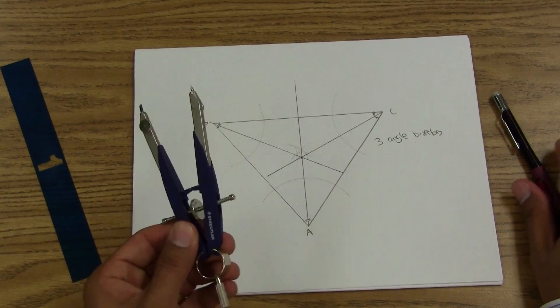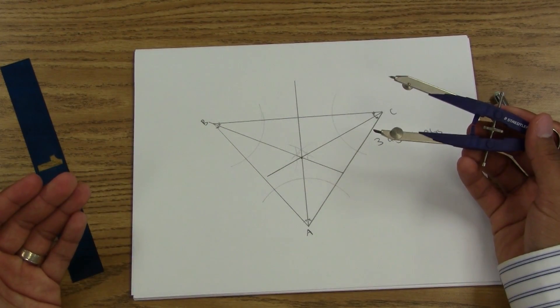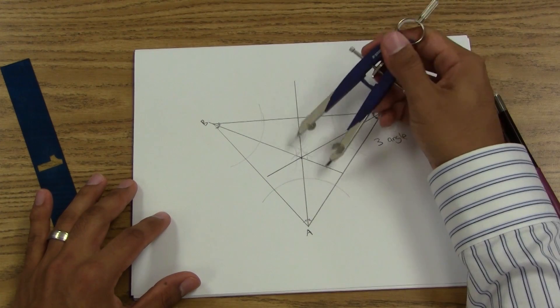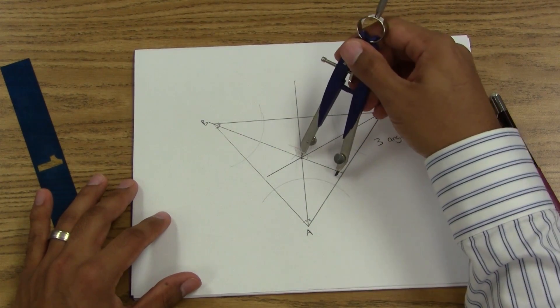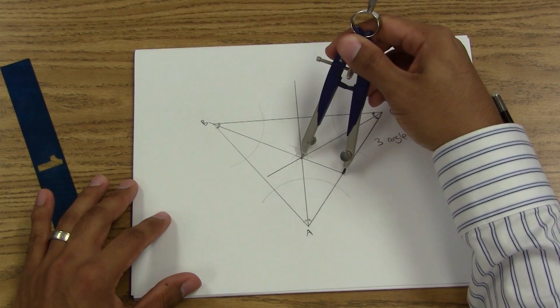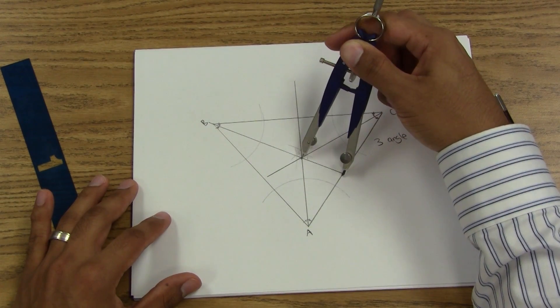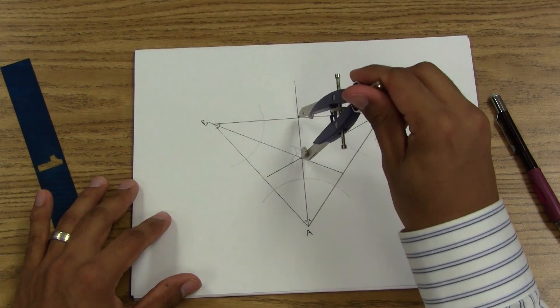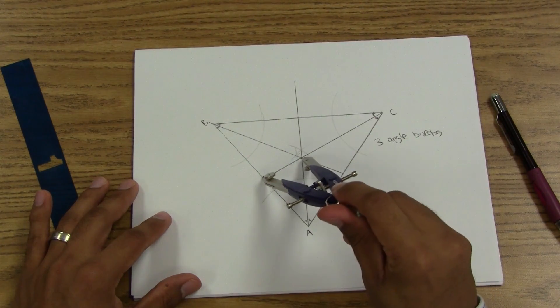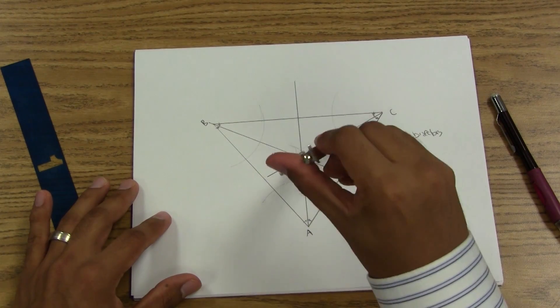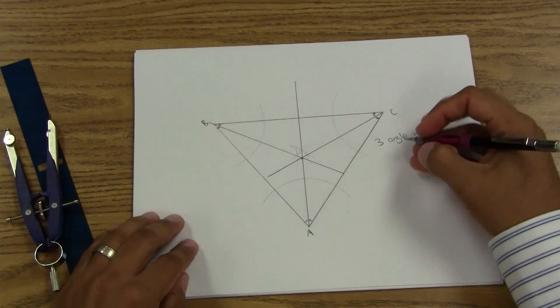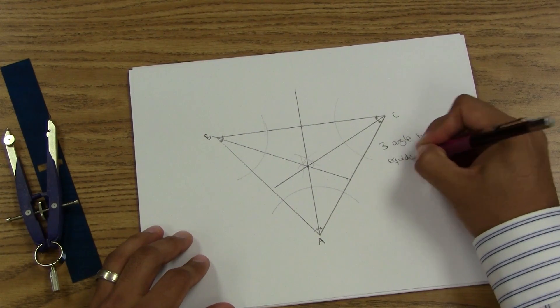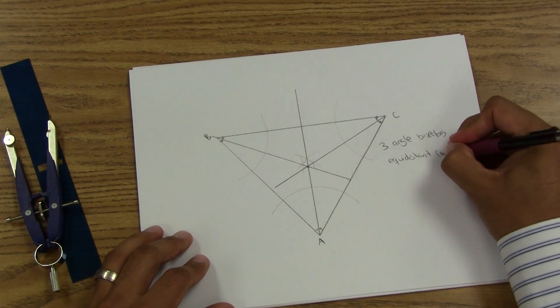Well let's see. Using my compass, why don't we see how special it is. I'm going to put one of my end points for the compass on my point of concurrency, and if I compare that to the sides that it's touching, I'm going to notice that it is equidistant from the sides of this triangle.